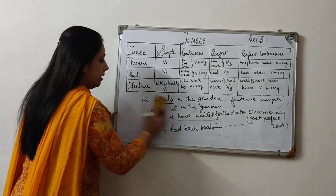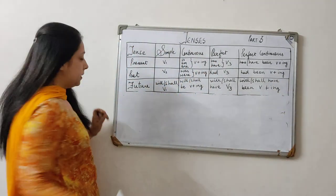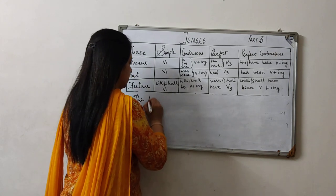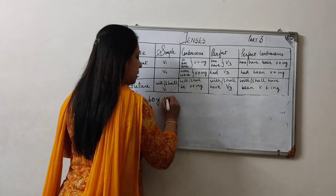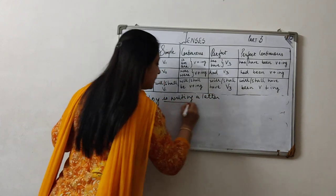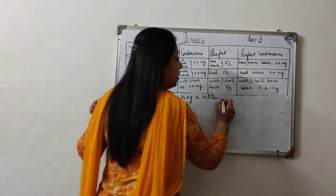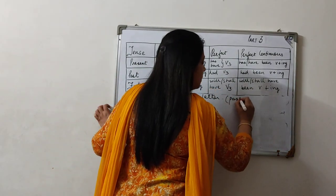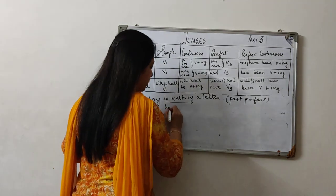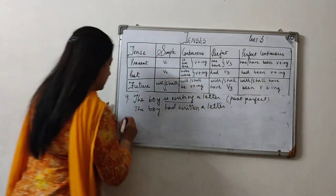Two more and then I want everyone to go through my video again and again and keep revising, keep learning this table. Suppose the next sentence is: 'The boy is writing a letter.' 'Is writing' is present continuous. If we have to change it into past perfect — past perfect is 'had' plus verb third form — 'The boy had written a letter.'